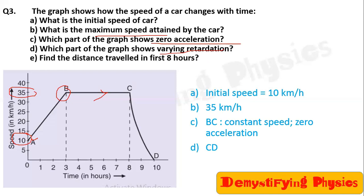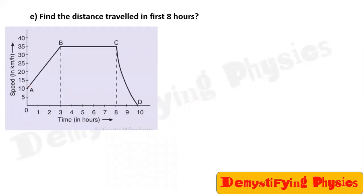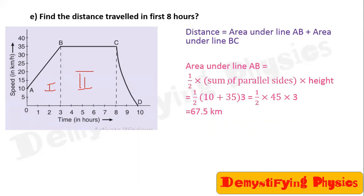Find the distance traveled in the first eight seconds. Distance is found by the area under the graph. For the first eight seconds, you need to find this area. First find the area of the trapezium, then find the area of the rectangle, and then add them. The area of a trapezium is half into the sum of parallel sides into height.